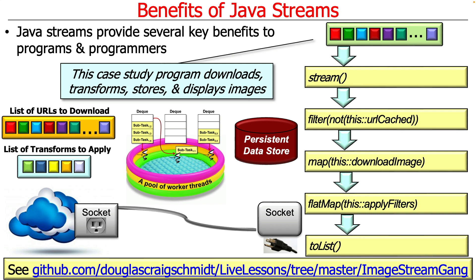This is the ImageStreamGang case study, and it's actually a bit like some of the stuff you've been doing for your programming assignments, but does it in a slightly different way. It doesn't have quite as flashy a GUI, and what it does is it downloads, transforms, stores, and displays images.